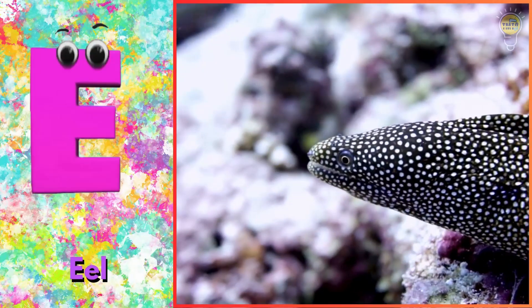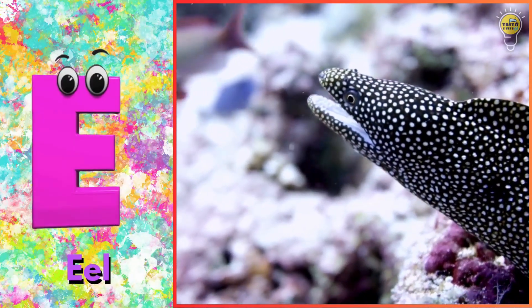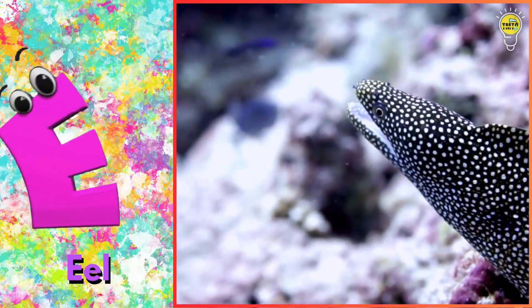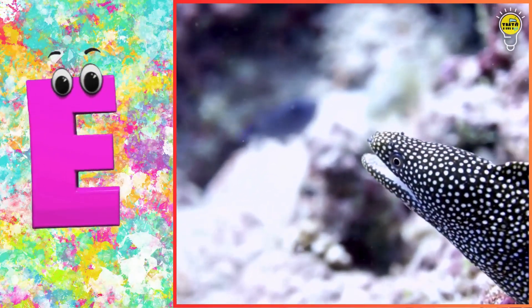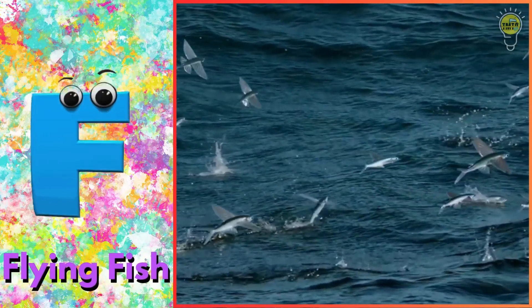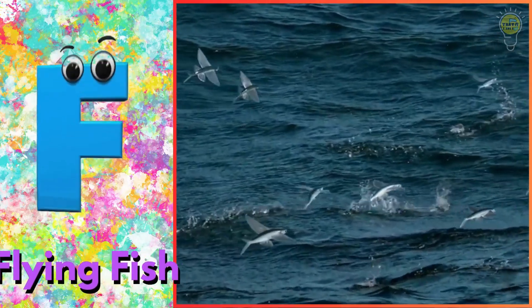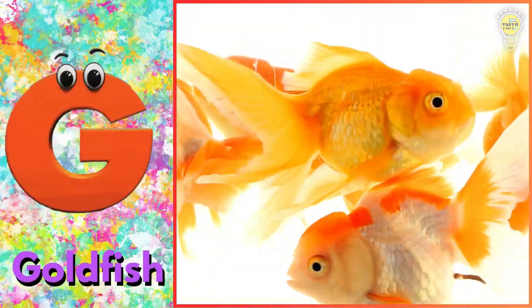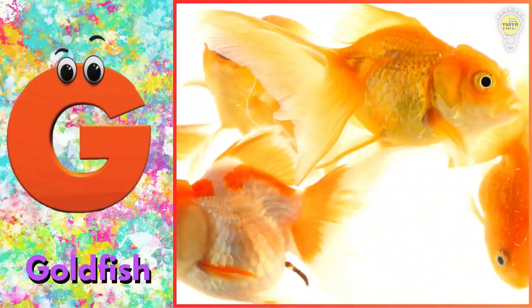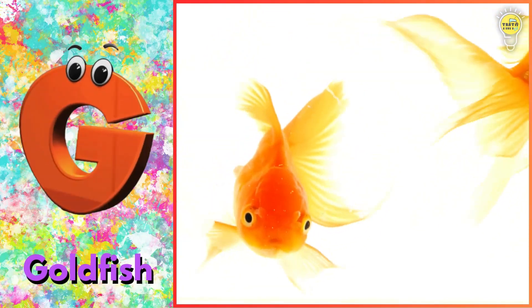E is for eel. F is for flying fish. G is for goldfish.